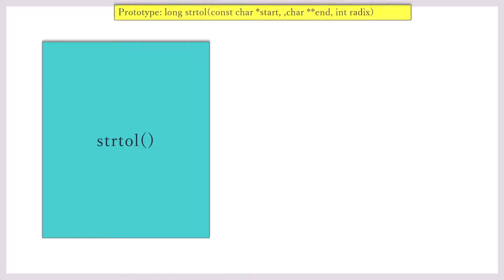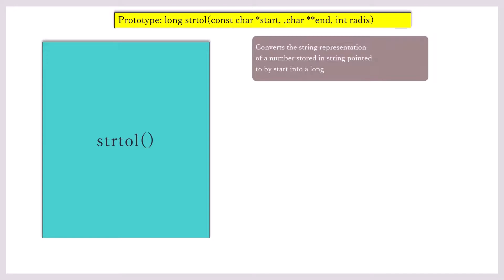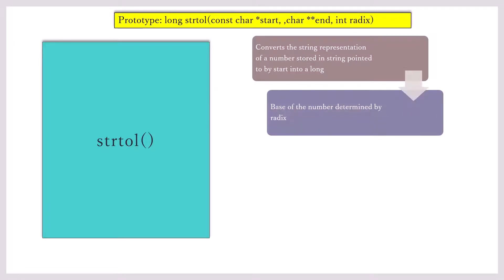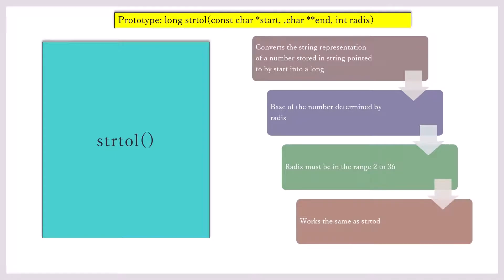Now coming to string to long, or strtol. You can see from the prototype this function returns a long value, taking as argument start, end, and an additional argument called radix. You need to provide the base — it can be anything from 2 to 36. It converts a string representation of a number stored in a string pointed to by start into a long. The base is determined by radix, which must be in the range 2 to 36. It works the same as strtod. So no code for this one.